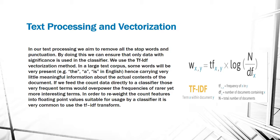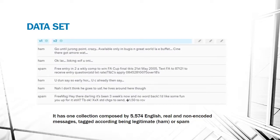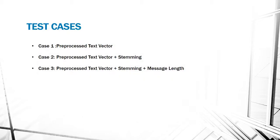The dataset is a collection of 5,574 English real and non-encoded messages tagged as ham for legit messages and spam for non-legit messages. We have three test cases. In case one, we'll do some initial data processing and use that preprocessed text vector. In case two, we'll use the preprocessed text vector with stemming. In the third case, we'll use preprocessed text vector, stemming, and also a message length feature into our curve fit, and use different classifiers to see which gives us better results.